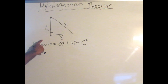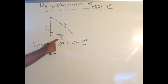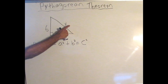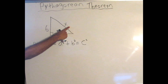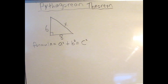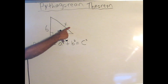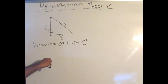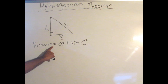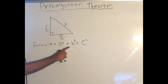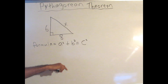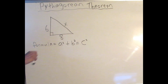They gave us a right triangle where this side measures 6, this side measures 8, and this side is x — meaning we need to find x, which is usually represented as a question mark. We're going to use the formula a² + b² = c² in order to find this.